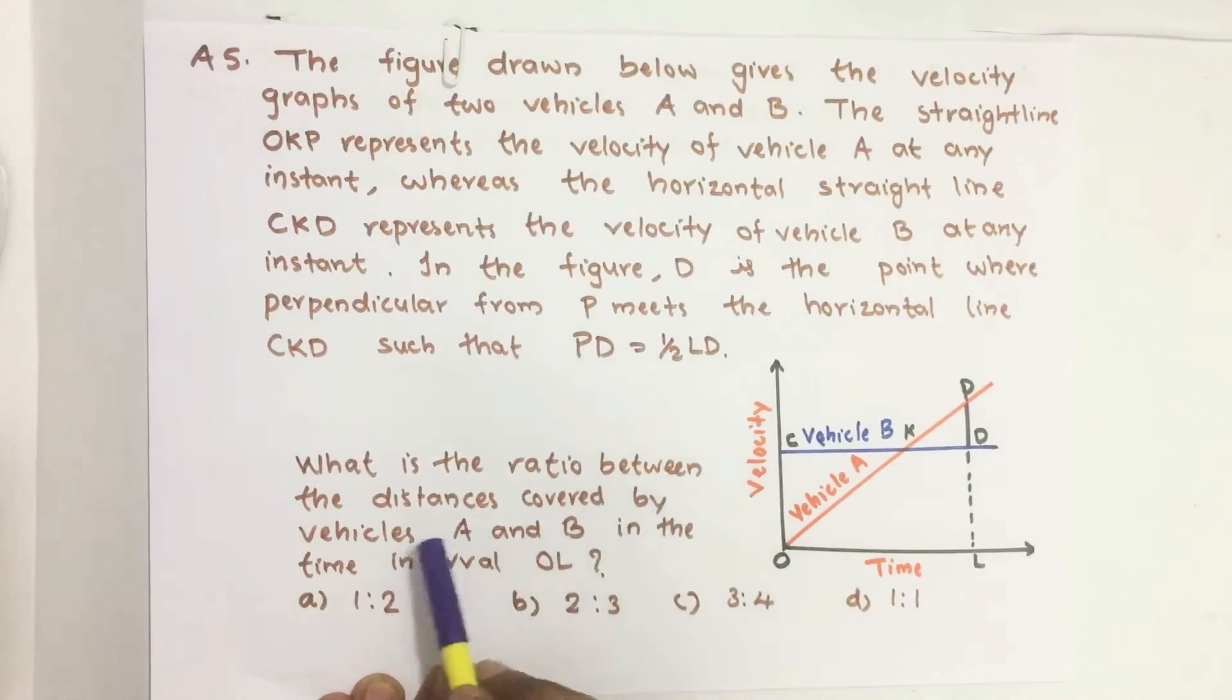What is the ratio between the distance covered by vehicles A and B in the time interval OL?